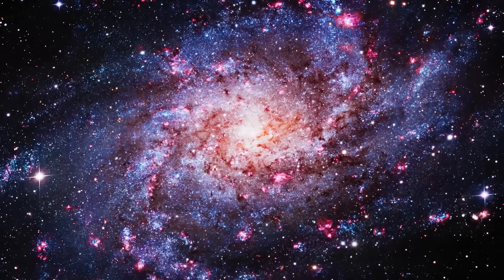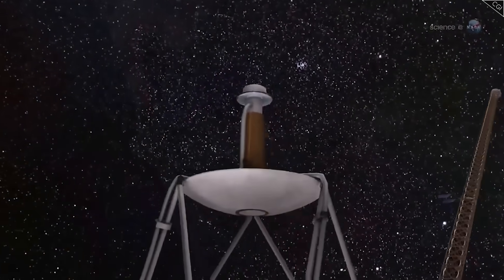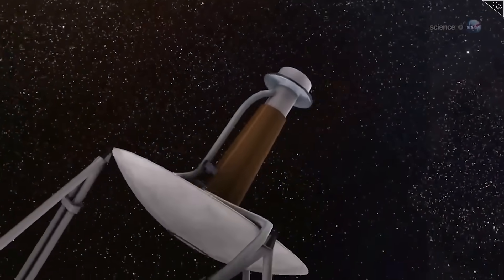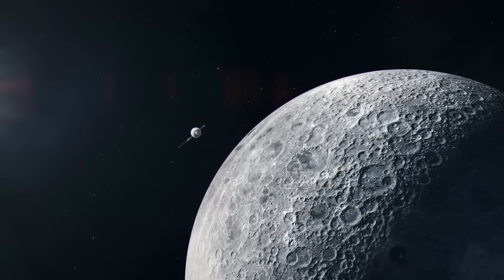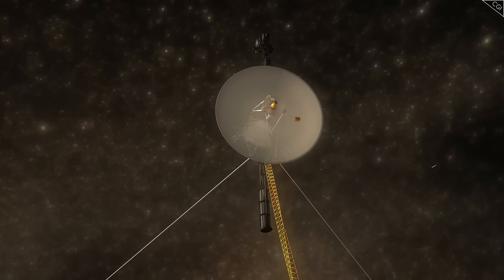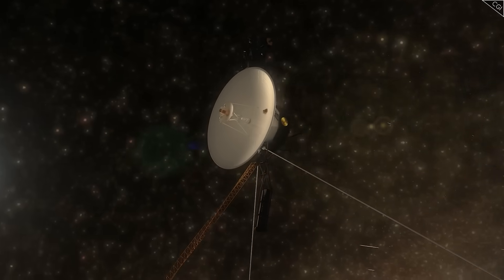Back in the early 1980s, Voyager was equipped with a high-gain antenna and transmission protocols designed to send back images and data from Saturn, Jupiter, and beyond. Those systems were never meant to last into the 2020s. Yet they did.